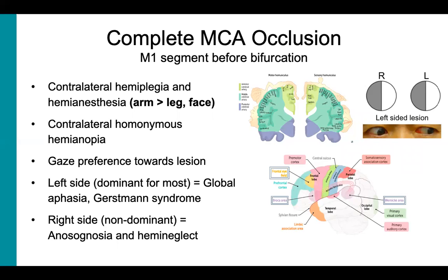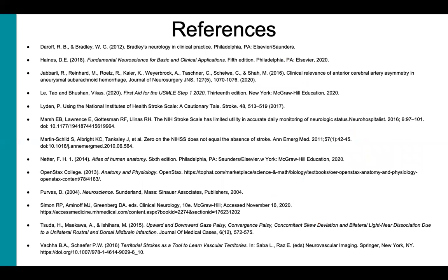Understanding the anatomy relating to these symptoms of a proximal M1 segment occlusion will help make the next few distal MCA syndromes easier to follow. Here are the references for parts one through four. The next video will finish anterior circulation strokes.